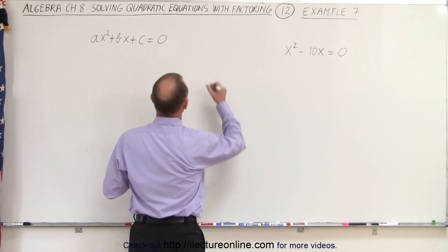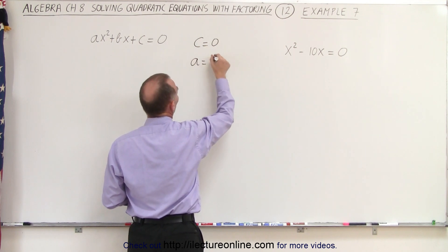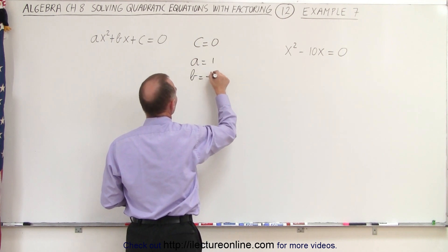In other words, in this example C is equal to zero, A is equal to 1, and B is equal to negative 10.